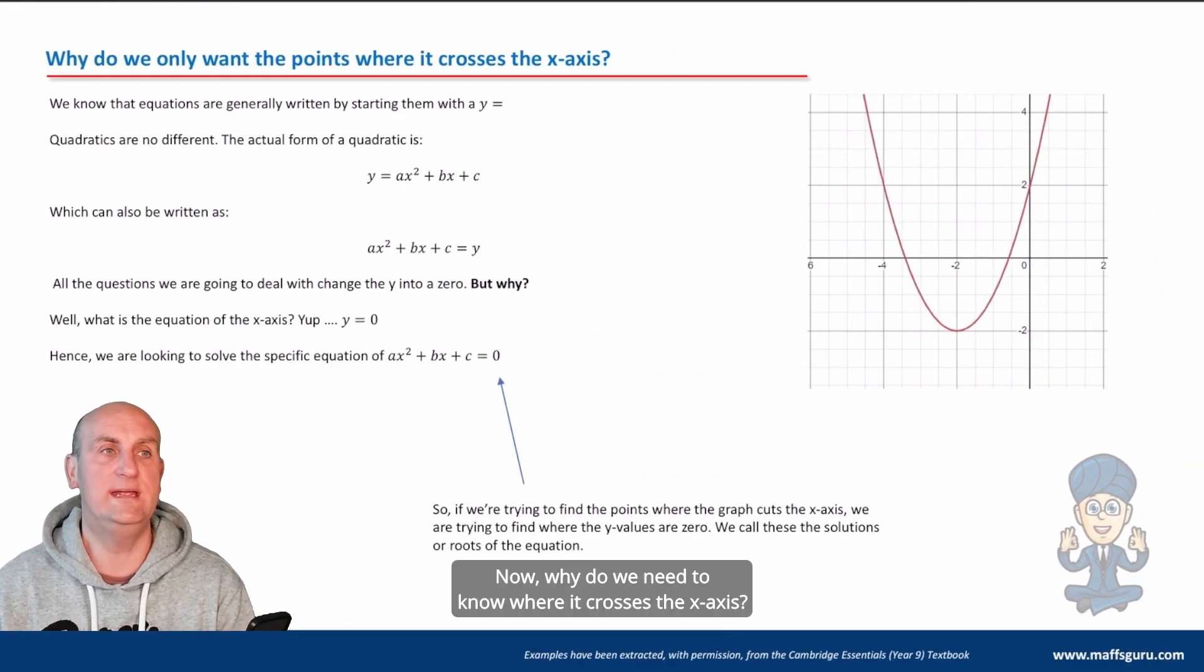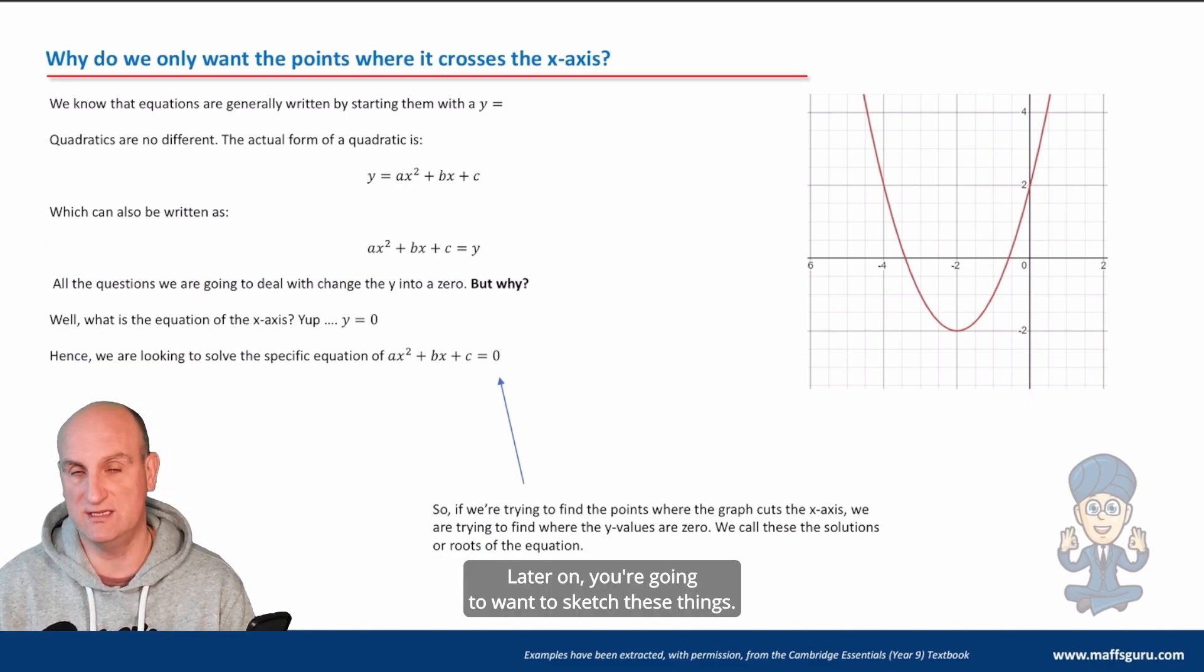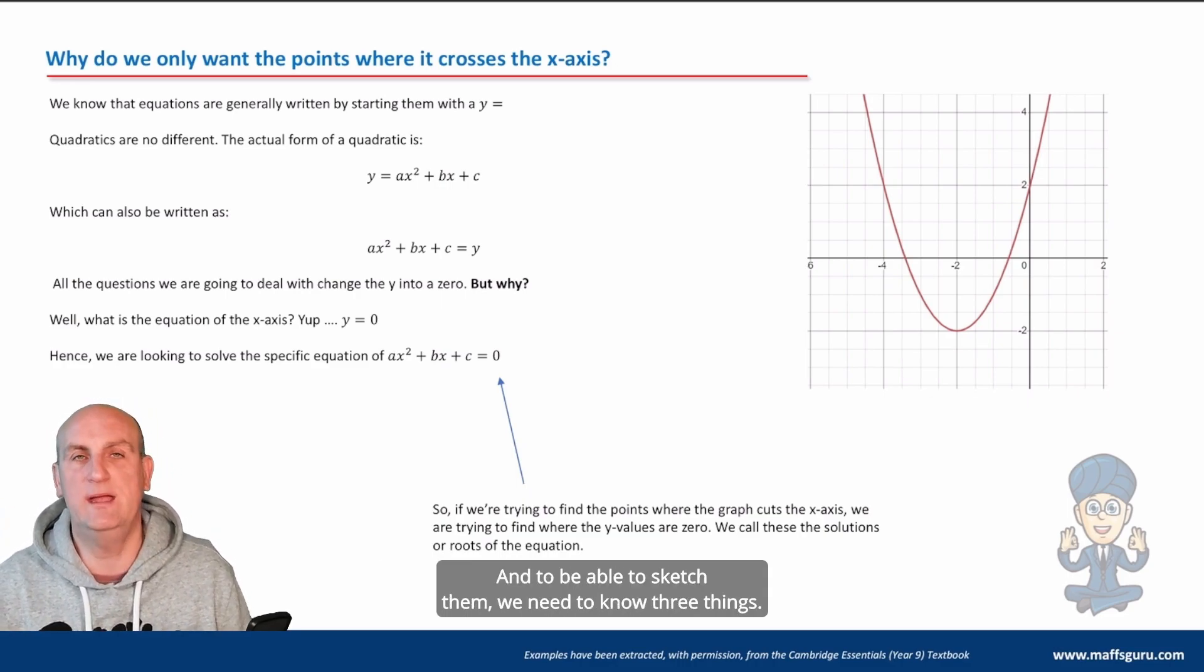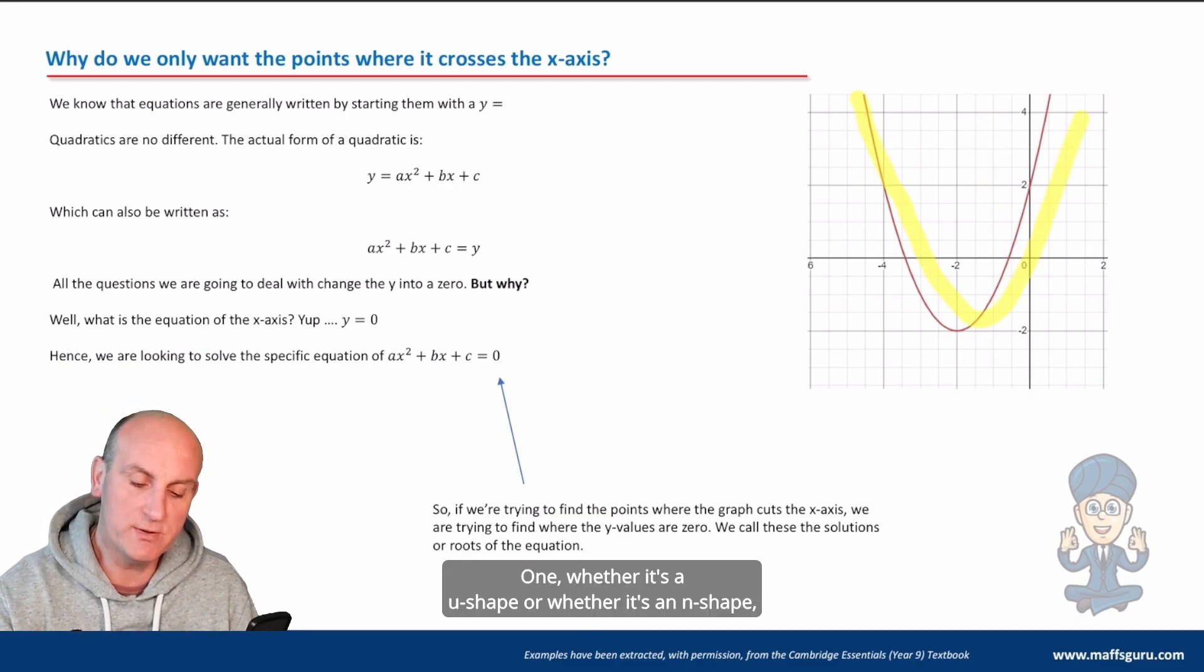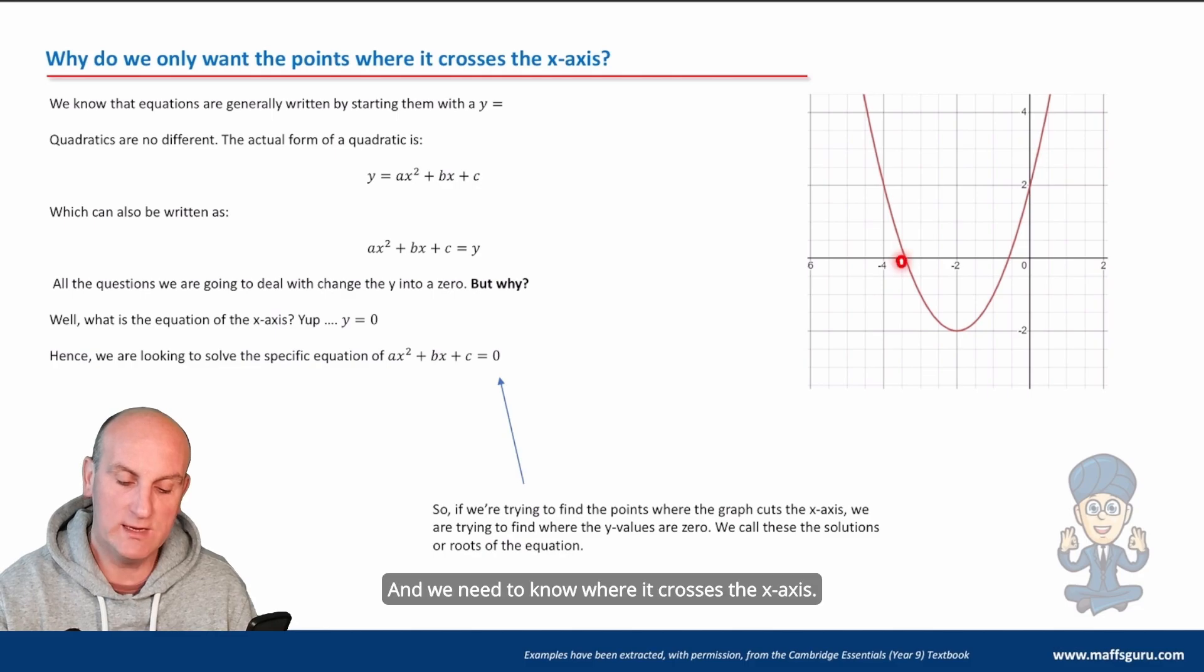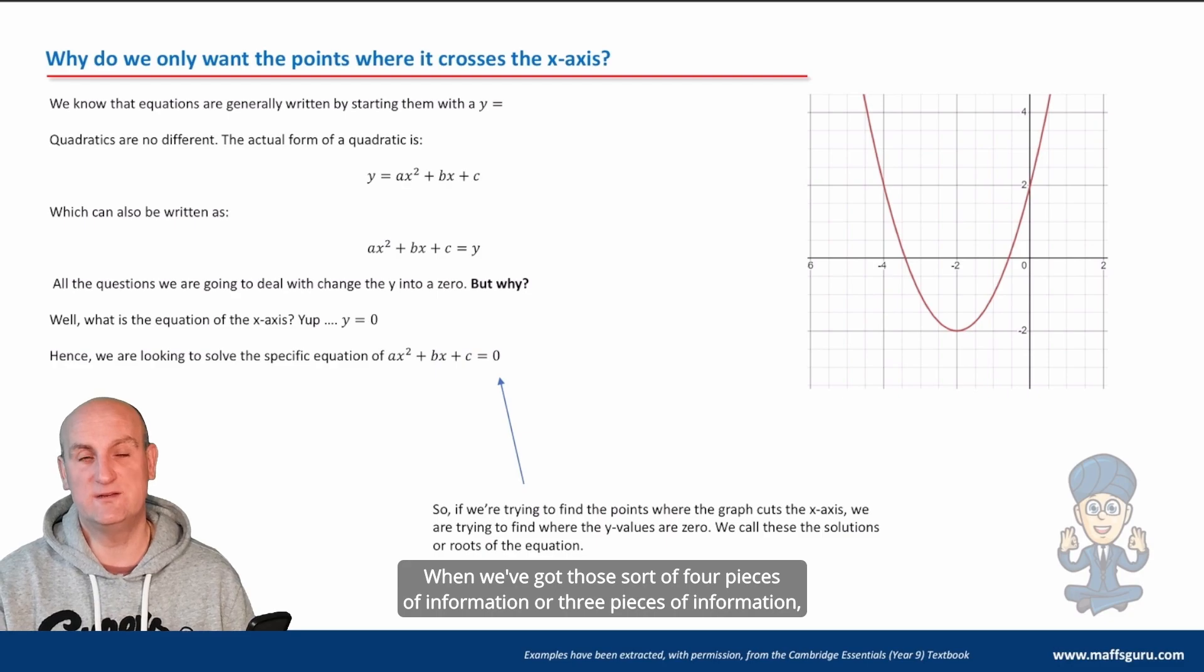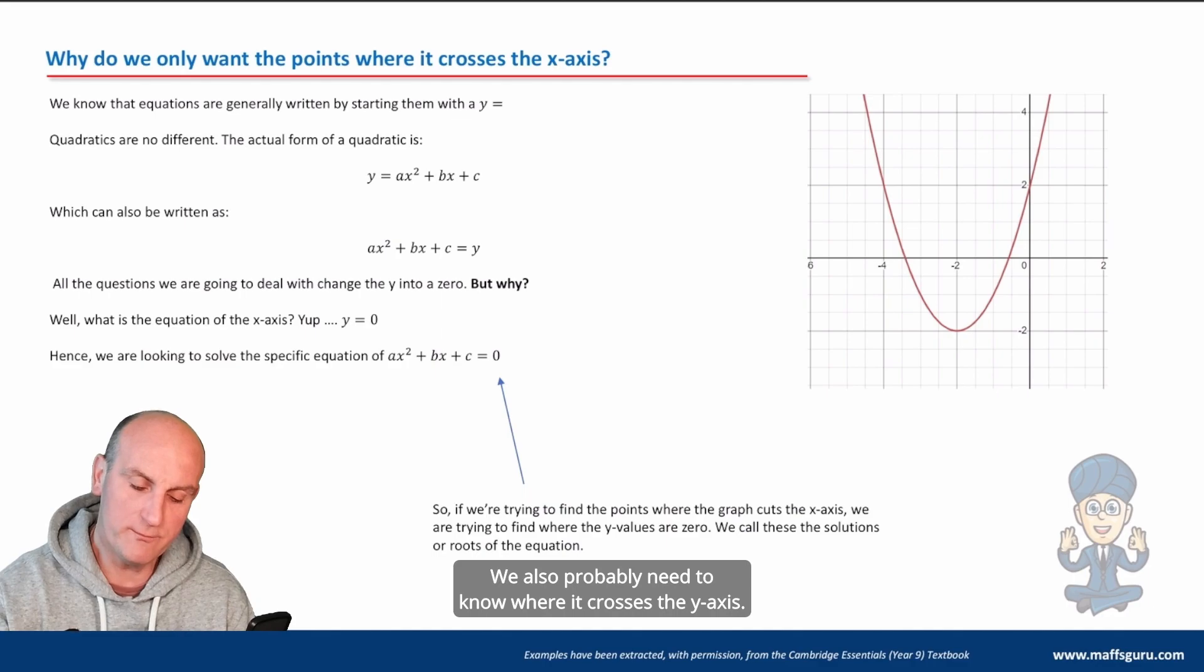Now, why do we need to know where it crosses the x-axis? Later on, you're going to want to sketch these things. Rather than draw them beautifully, or plot them, we want to sketch them. And to be able to sketch them, we need to know three things. One, whether it's a U shape or whether it's an N shape, we need to know what the lowest point is or the highest point. And we need to know where it crosses the x-axis. When we've got those pieces of information, we can actually sketch these things pretty accurately. We also probably need to know where it crosses the y-axis.